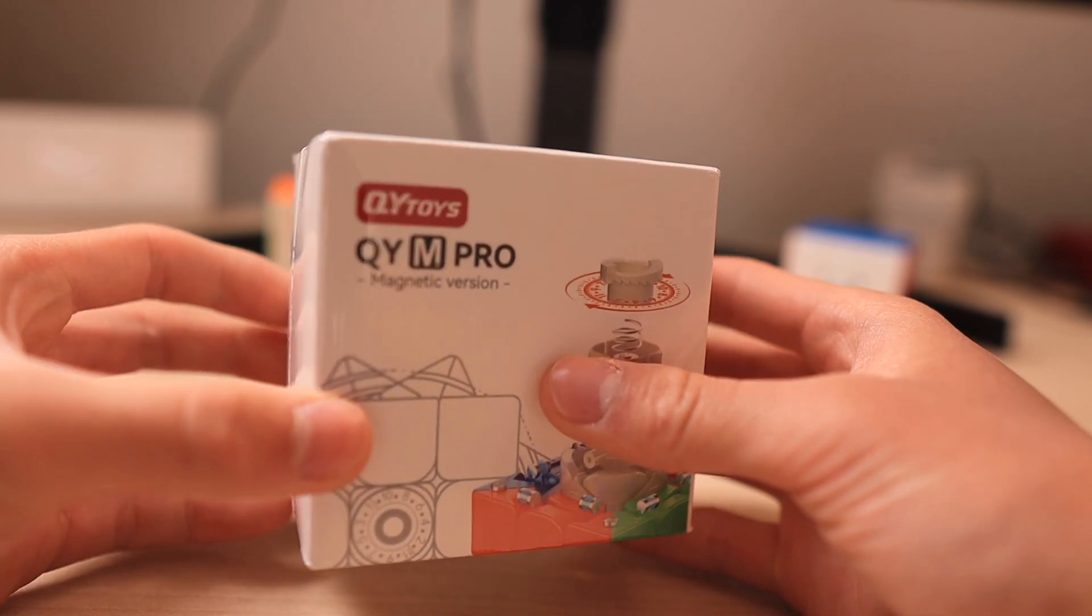Once again, a huge thank you to Qiyi for sending out this cube to me. It took about a week for them to send the cube. I really applaud them for their good customer service. I believe it is a budget version of their 3x3 line, and I'm super excited to try it out. So I'll be trying to compare it with my Super RS3M because it is one of those cubes that's around the same budget.